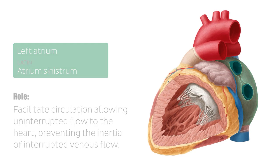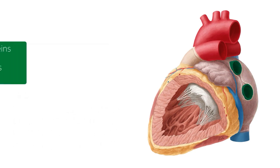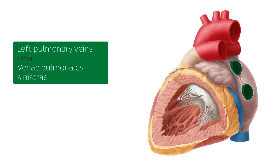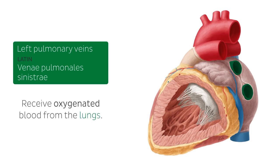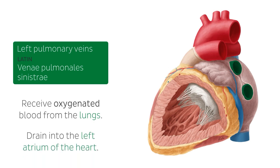Other structures highlighted here are the left pulmonary veins specifically. The pulmonary veins are large blood vessels that receive oxygenated blood from the lungs and drain it into the left atrium of the heart. There are four pulmonary veins — two from each lung — and we see here two, the two left pulmonary veins. The pulmonary veins are among the very few veins that carry oxygenated blood.